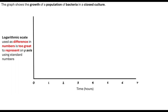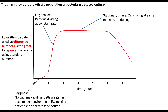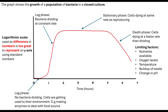Let's take a step back and remind ourselves about the population growth curve of bacteria in a closed culture. You should remember that it always follows the same path: you will have your lag phase, your log phase, your stationary phase, and the death phase. This is our population growth curve, and we know that there are some limiting factors which can limit the rate of growth of these microorganisms.